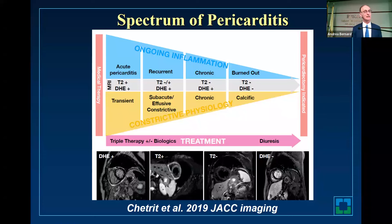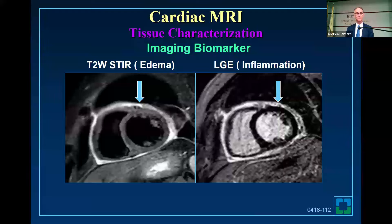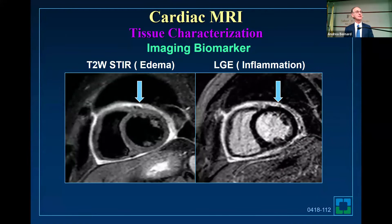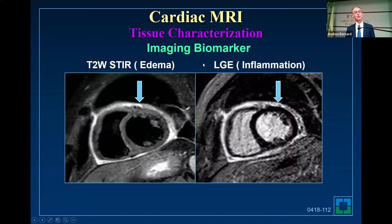When I see somebody, I ask where they are in the spectrum of pericarditis. In terms of multimodality imaging, MRI is really an important imaging biomarker. Partho and I were talking earlier about whether echo with better imaging can perhaps detect inflammation. Here you see edema and inflammation on MRI, and from this picture you can predict how long treatment is going to take.